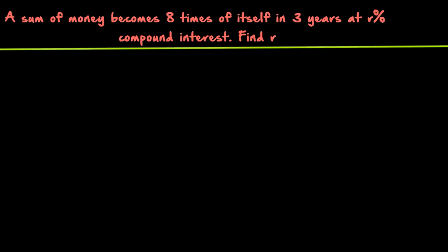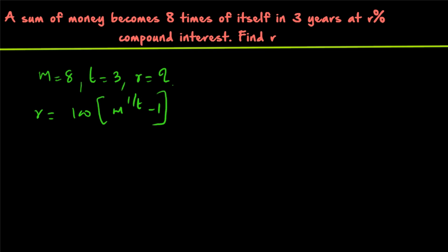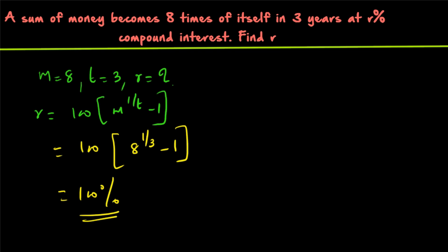Question 2: A sum of money becomes 8 times of itself in 3 years at R percentage compound interest. Find R. Here M = 8 and the time period T = 3. Applying the formula: R = 100 × (8^(1/3) − 1). Now 8^(1/3) means the cube root of 8, which equals 2. So R = 100 × (2 − 1) = 100 × 1 = 100%.